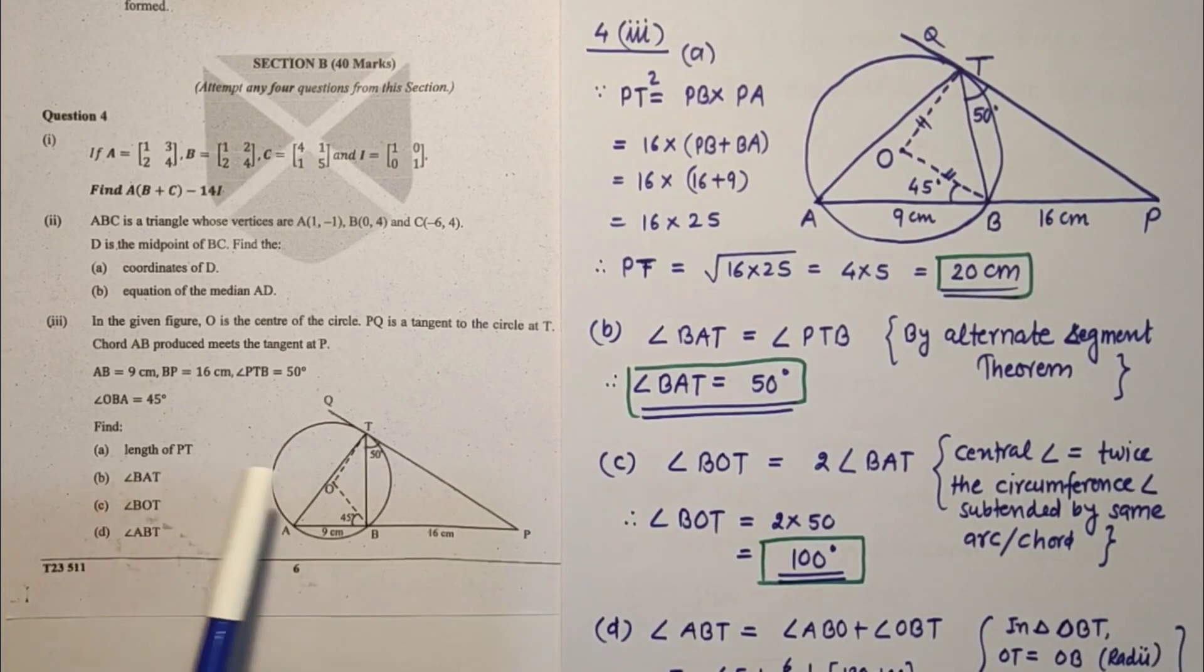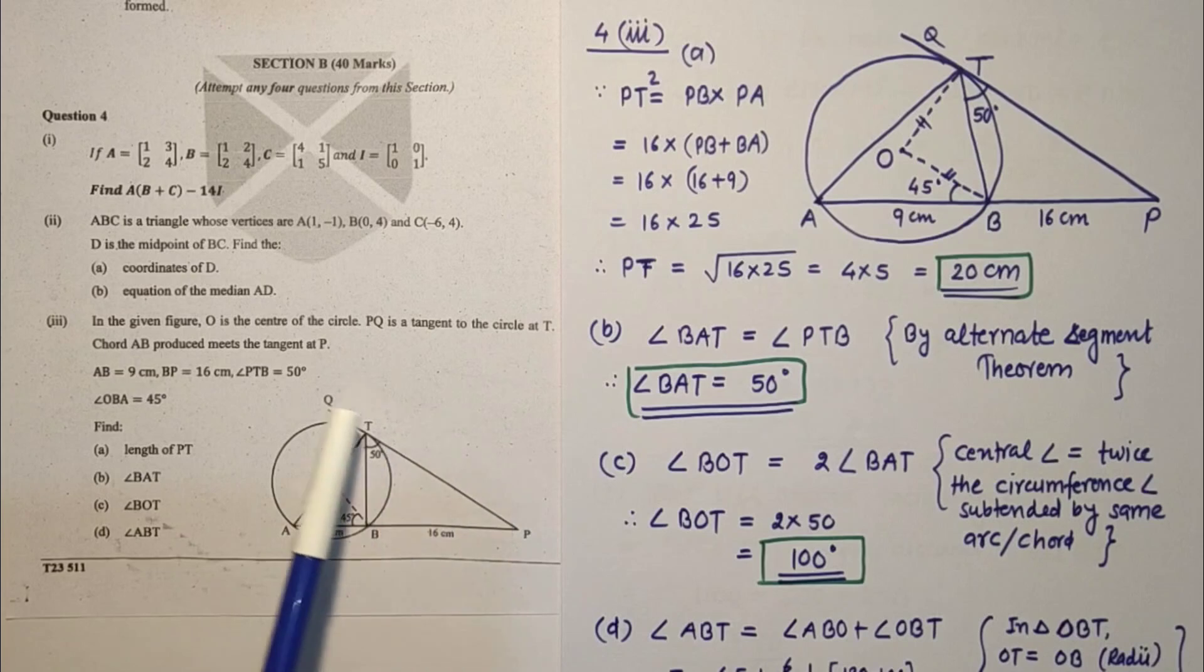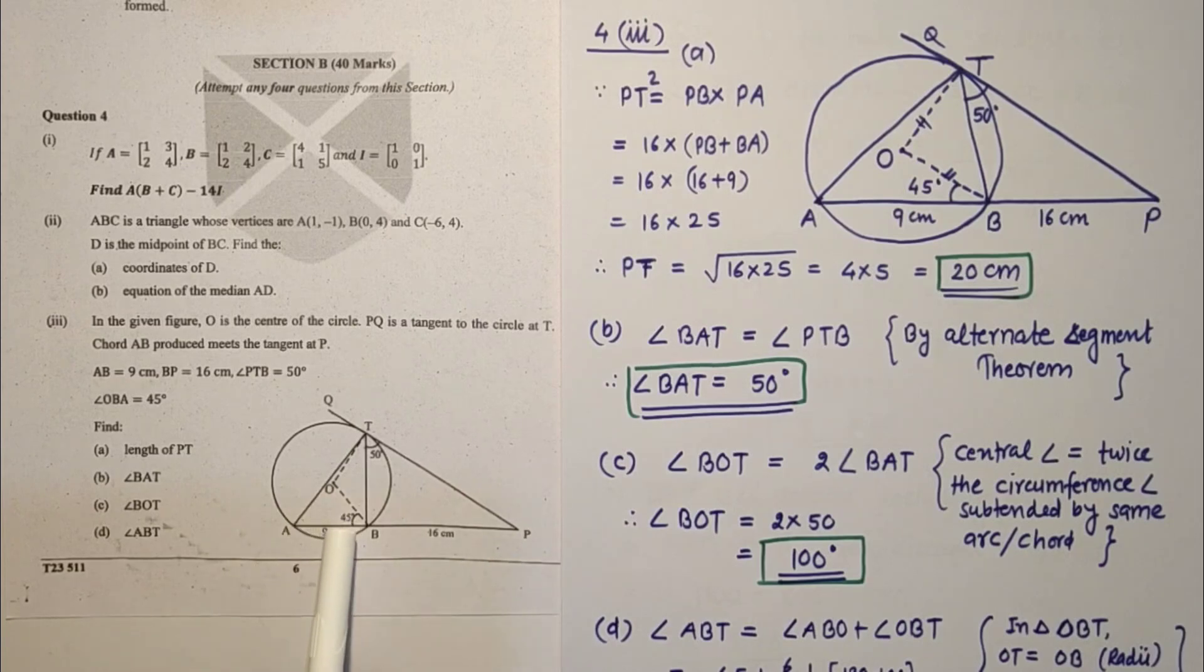Question 4 third sub part. A circle is given, PT is tangent touches at point T, this angle is 50. AB is 9 cm, PB is 16 cm, and this angle is 45. We have to find four parts: length of PT, angle BAT, angle BOT, angle ABT.